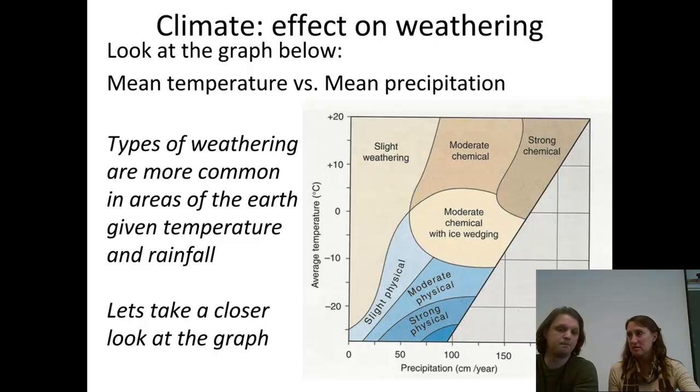So we would expect to see frost wedging below the zero level of the temperature. Because that's where you're going to have freezing. And strong physical weathering happening where it's even colder. But there has to be water. And that's what we see. The darker blue color at the bottom of this diagram is the stronger physical weathering component.